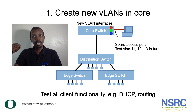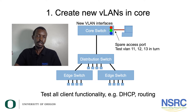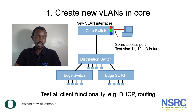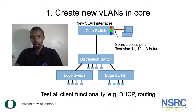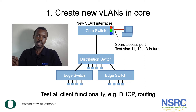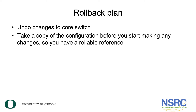Step one: create the new VLANs inside the core and create a spare access port, connect your laptop to it, and test all functionality. For example: do you get a DHCP address? If not, check the DHCP server, the DHCP relay configuration, routing, access to printers, and access to servers. We're using VLANs 11, 12, and 13, so you set an access port to 11 and test everything, then set it to 12 and test again. The rollback plan for step one is to undo the changes on the core switch.